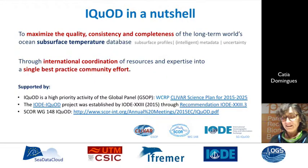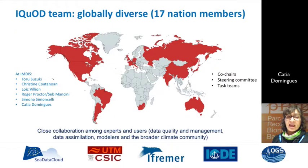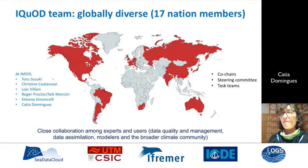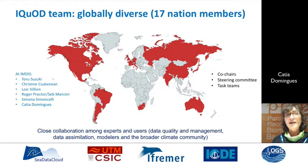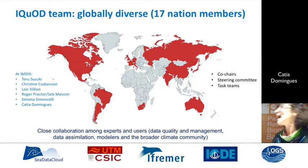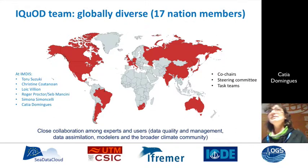We have a very dedicated team, like many of us here. In terms of who we are, at the moment we represent 17 nation members. We have a structure with co-chairs, steering committees and task teams. Here at this conference we have Toru, Christine, Ruik, Roger and Sarah, Simona, myself, and I hope I didn't miss anybody else.